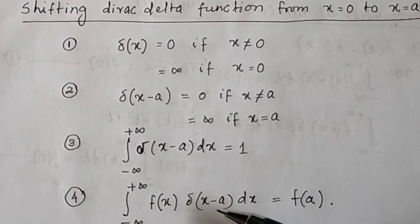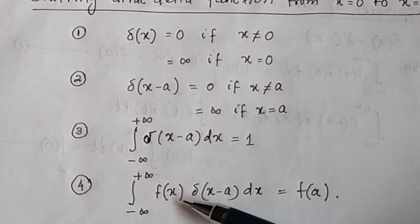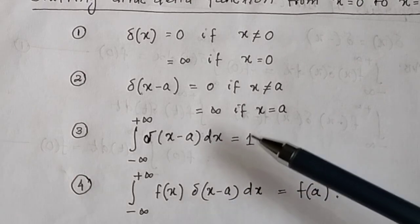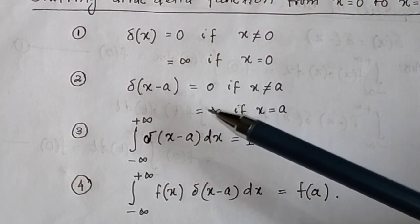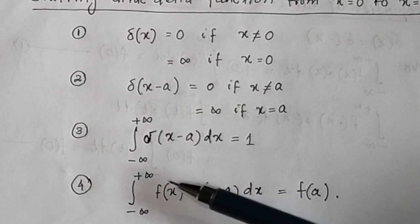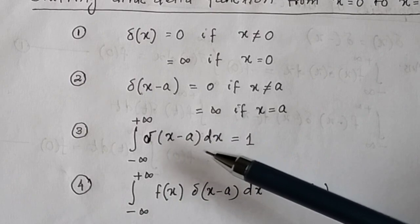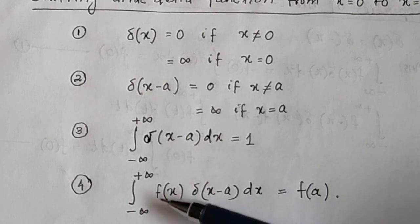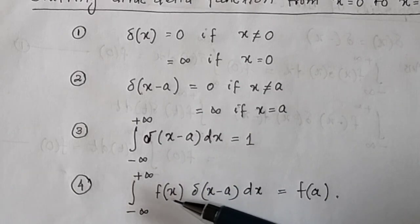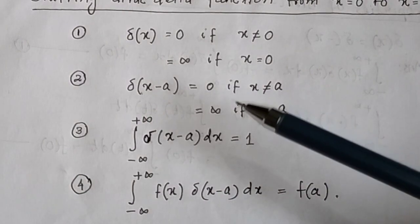Then what will be the identity of delta(x minus a)? If f(x) is a continuous and differentiable function at x equal to 0, then the integral of f(x) delta(x minus a) dx will be equal to f(a). Because at x equal to a, delta(x minus a) equals infinite, so the integration of delta(x minus a) dx from minus infinite to plus infinite equals 1. Therefore at x equal to a, the function f(x) will be equal to f(a).